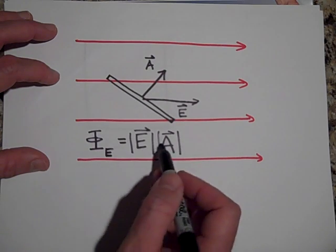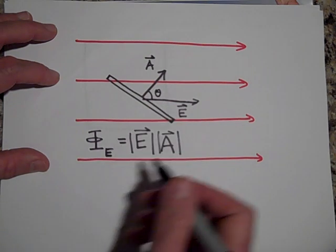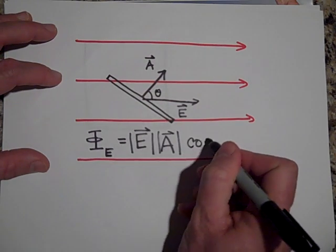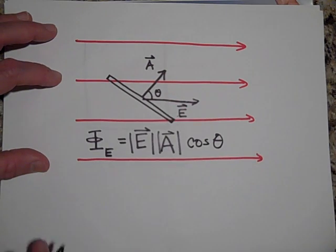Okay, but the only two things that matter—the angle that this makes also matters. So I'm going to have a cosine of theta, where theta is the angle between E and A.